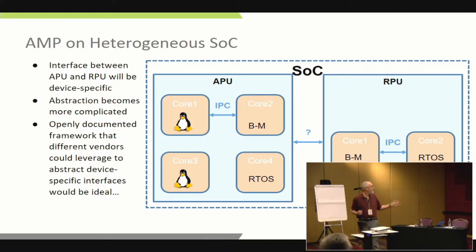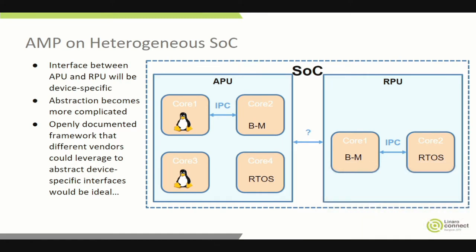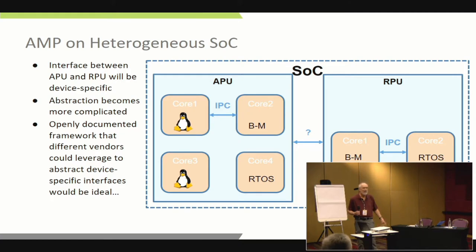You've got the APU running some cores — maybe with a hypervisor you get a mix, otherwise they all run Linux. And then you've got other cores which could be the RPU — Cortex-R5 type cores — which could be running in lockstep or with some form of limited AMP, with partitioned memory and a very small shared region. But then you've got to talk between them, and that's the question. The interface is going to be very device-specific — whatever works on ST probably won't work on a Zynq — so it would be nice to have an openly documented framework.